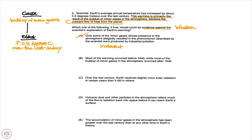Moving to B. Most of the warming occurred before 1940, while most of the buildup of minor gases in the atmosphere occurred after 1940. So what B is telling us on this timeline: prior to 1940, we had most of the warming; after 1940, we had most of the minor gas buildup.